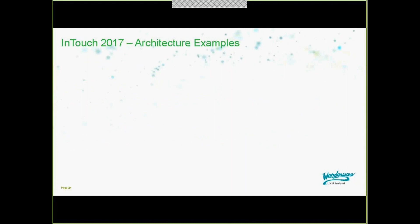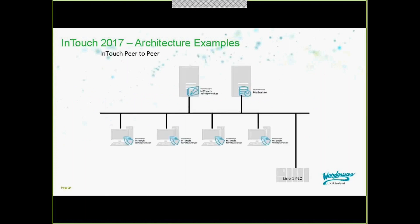Let's look at architecture examples. In an InTouch peer-to-peer architecture, we have a number of InTouch nodes — one or multiple — acquiring data from our PLC. You can link a standalone InTouch application into other Wonderware applications such as Historian, which is used for historical functionality and retrieval of data from InTouch.